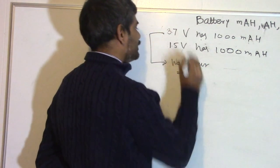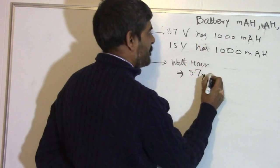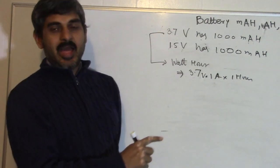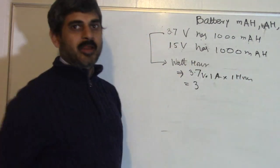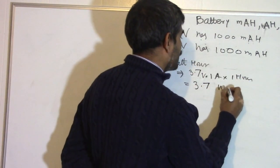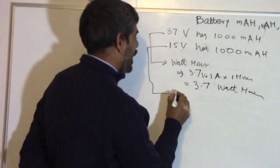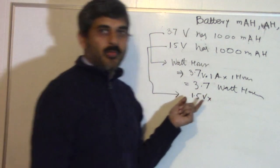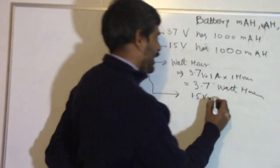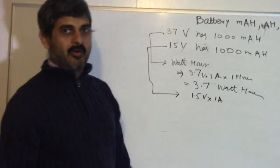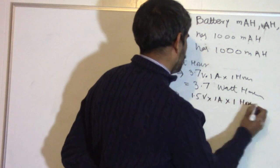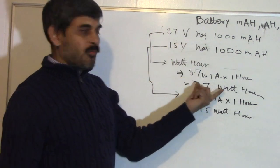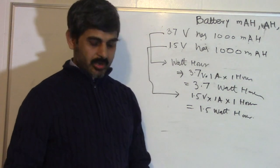What is watt hour? If I take 3.7 volts and 1 ampere of current, that will last for 1 hour. Voltage multiplied by current becomes power, and that power multiplied by time will become 3.7 watt hour. On the other hand, if I use the 1.5 volt battery giving 1 ampere of current, then that will be giving 1.5 watts of power, and I can take the current only for 1 hour, so its watt hour will be 1.5 watt hour. So obviously, the 3.7 volt battery will deliver more total energy compared to the smaller 1.5 volt battery.